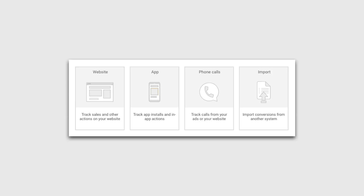Adding a new conversion gives us a list of the different dedicated AdWords conversion tracking options available. First, we have the option to track website conversions — the most common type we're going to configure. We also have the option to measure conversions for our apps, phone calls, and even import conversion data. Let's start by looking at website conversions.